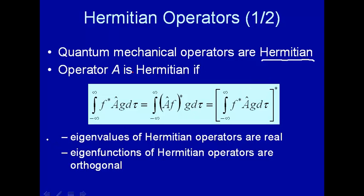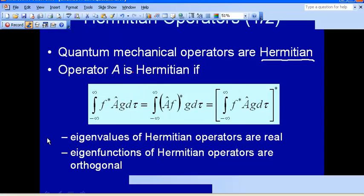The eigenvalues—why is it important that the operator corresponding to an observable is Hermitian? It turns out that the eigenvalues of Hermitian operators are real. Why is that important?